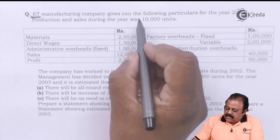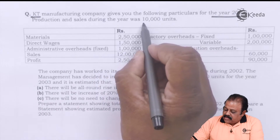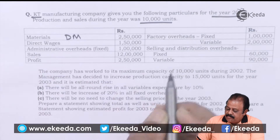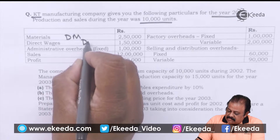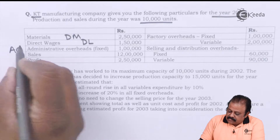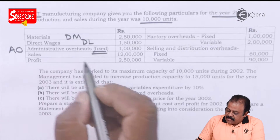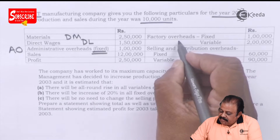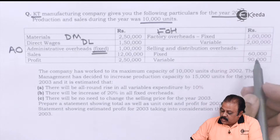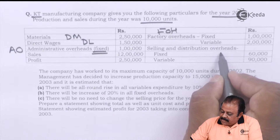KT Manufacturing Company gives you the following particulars for the year 2002. Production and sales during the year was 10,000 units. Direct material: ₹2,50,000; direct wages (direct labor): ₹1,50,000; administration overheads (fixed): ₹1,00,000; factory overheads: fixed ₹1,00,000, variable ₹2,00,000; selling and distribution overheads: fixed ₹60,000, variable ₹90,000.